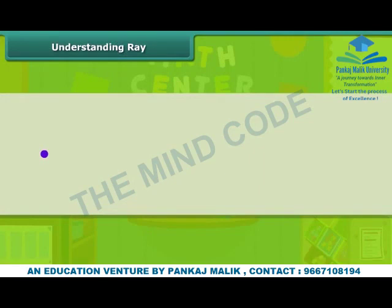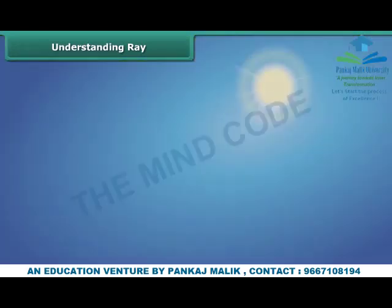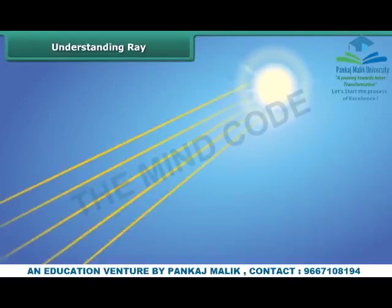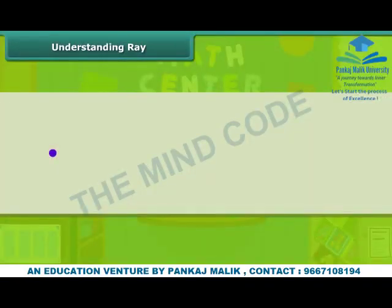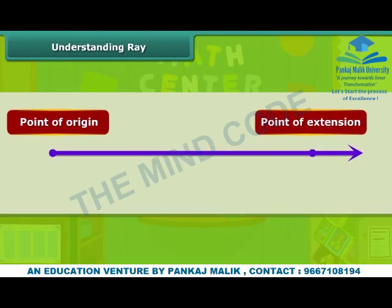We have learnt about a line segment. What if we keep one end point fixed and extend the other? Such a figure is called a ray. You can consider this as sun rays. Geometrically, we call the fixed point the point of origin and the extension as its direction of travelling. We name a ray by two points: the point of origin and a point before the arrow.